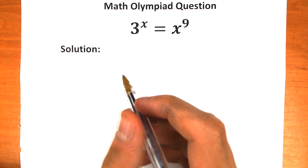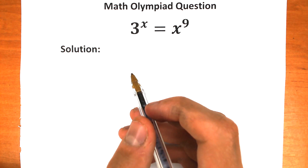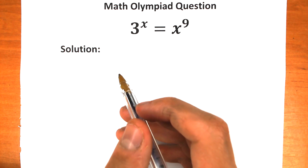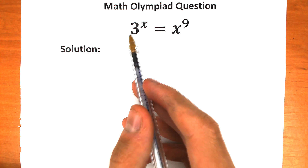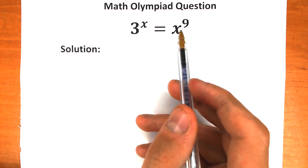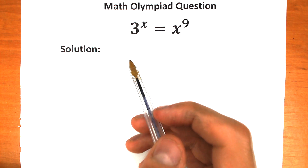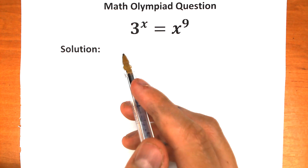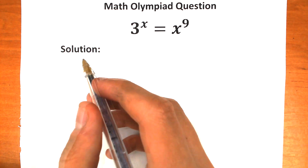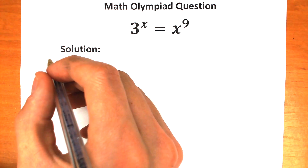Welcome to Higher Mathematics. Let's solve this really interesting exponential equation: 3 to the x equals x to the 9. There are two methods, and in this video I'm going to show you a really great first method.